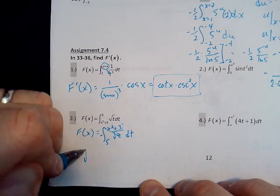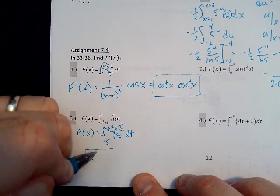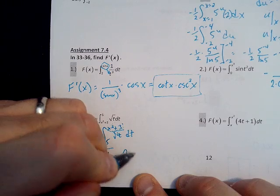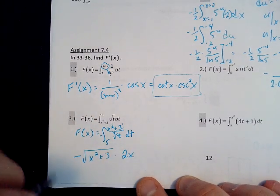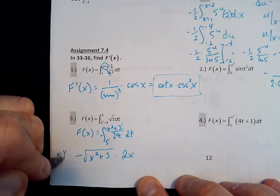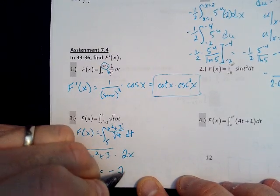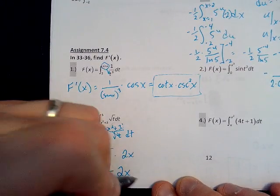So I've got the negative out front, I've got the square root of G of X, so X squared plus 3, times the derivative of X squared plus 3, which is 2X. And so that means that capital F prime of X will be negative 2X, I just put that in front.